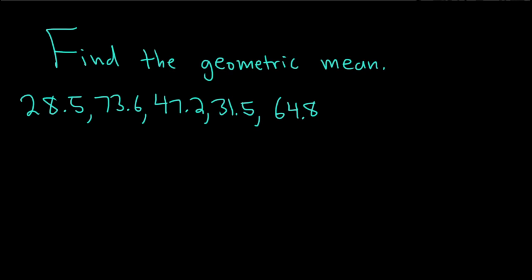In this problem, we have some numbers and we're going to find what's called the geometric mean. Let's go ahead and work through it. Solution. So you have 1, 2, 3, 4, 5 numbers, and we're going to find the geometric mean.